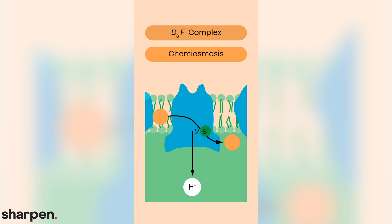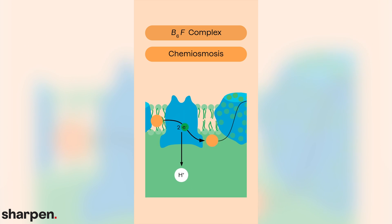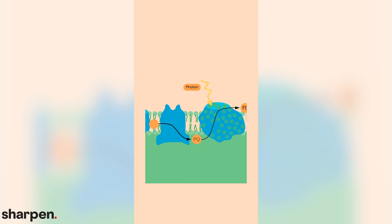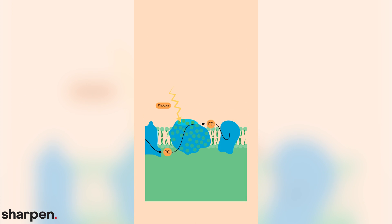Meanwhile, the electrons that provided energy to the B6F complex are passed along to photosystem I. Photosystem I captures longer wavelengths of light than photosystem II. While photosystem II plucks electrons from H2O molecules, photosystem I can only receive electrons that have been passed along from photosystem II. The electrons that are re-excited at photosystem I are passed to another carrier, which uses them to reduce NAD+ to NADPH.